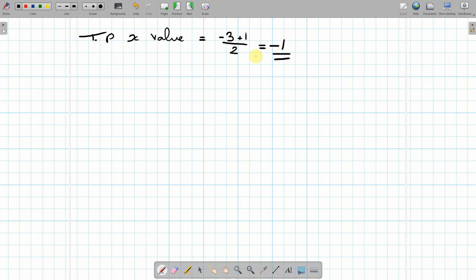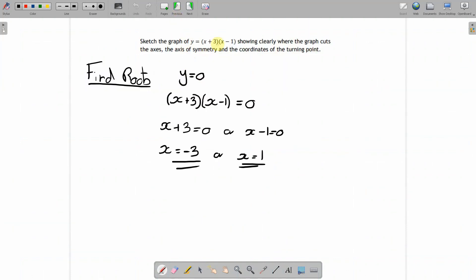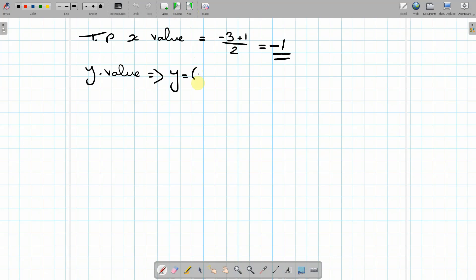So if that's minus 1, then we want the y value. So we substitute that in to the equation that we had before. So it was y equals (x plus 3)(x minus 1).